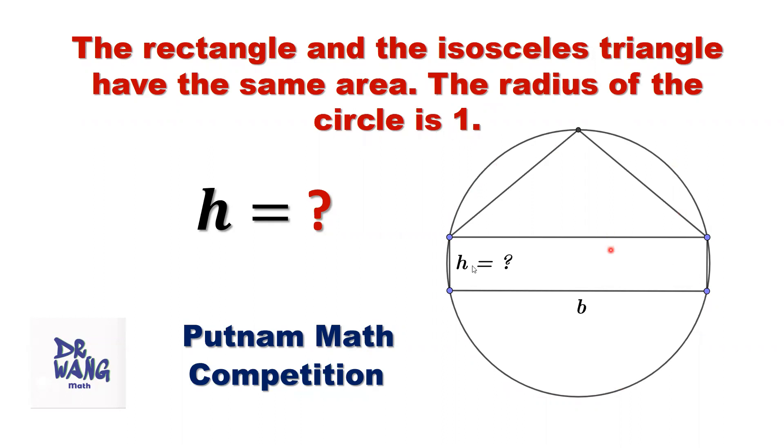This is the circle, and this is the rectangle, and this is the triangle, isosceles triangle. All intersection points are on this circle. The question is, what is the value of h?